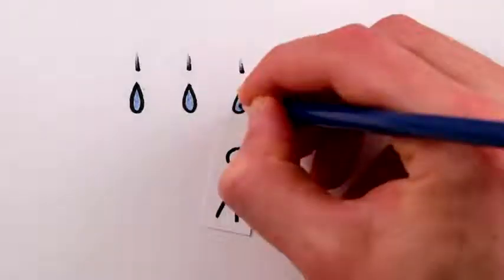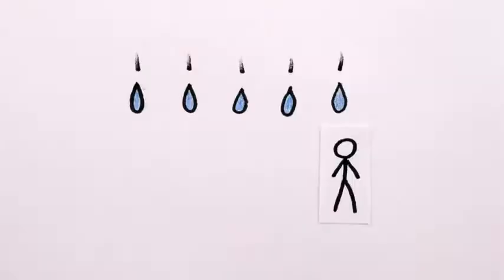As you move out of the way of one falling raindrop, you move into the way of another, so the amount of rain hitting the top of you is constant, regardless of how fast you're going.